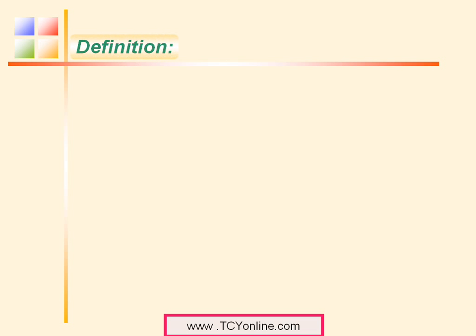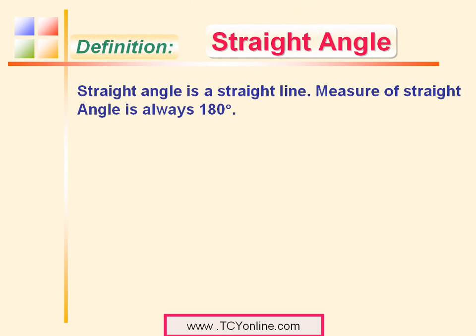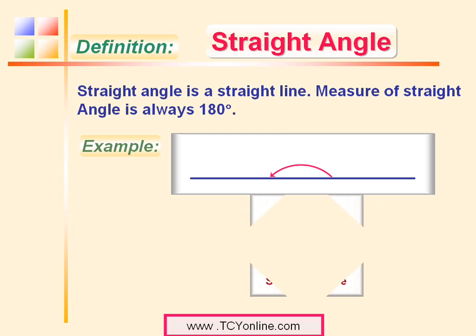Now let's combine two right angle triangles and study straight angles. A straight angle is simply a straight line and always has a measure equal to 180 degrees. For example, this straight line makes an angle of 180 degrees, so it is a straight angle. Similarly, look at this clock showing 6 o'clock — the hour hand and the minute hand make an angle of 180 degrees because they appear to form a straight line.